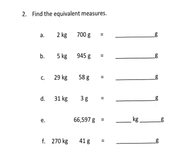In this problem, we're being asked to find the equivalent measures, and it looks like most of them are in the smaller units. For this first one, we have 2 kilograms and 700 grams, and we're supposed to write that in grams only. So 2 kilograms is equal to 2,000 grams plus the 700 grams that we already have, so that gives us 2,700 grams.